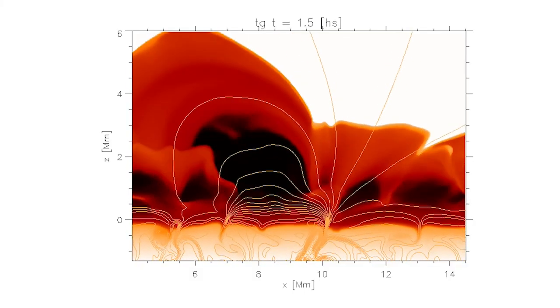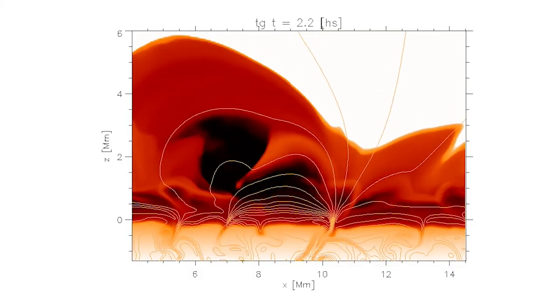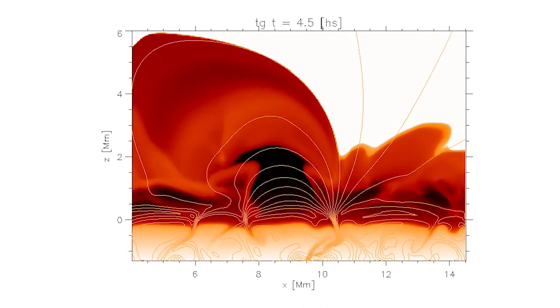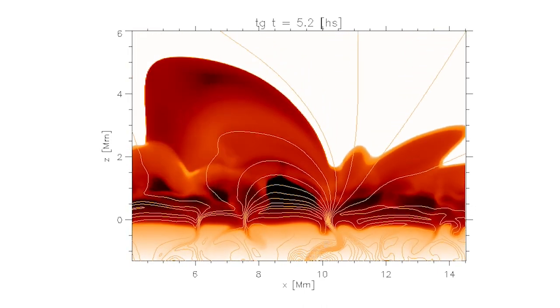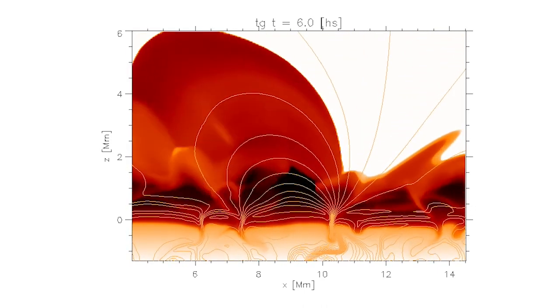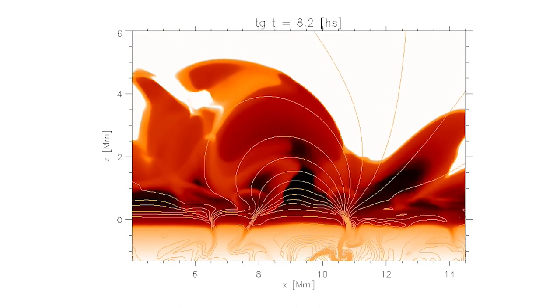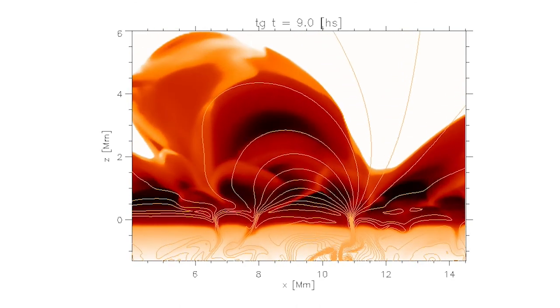There are many ways of trying to figure that out. One of them is to build so-called numerical models. In numerical models, you put the physics that you know and think are operating on the Sun into a computer, and then you turn on the computer, let it run, and see what happens.